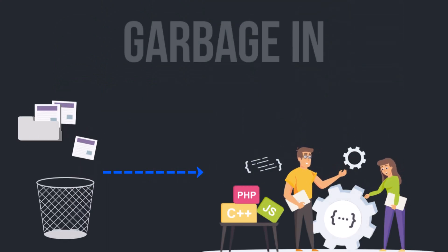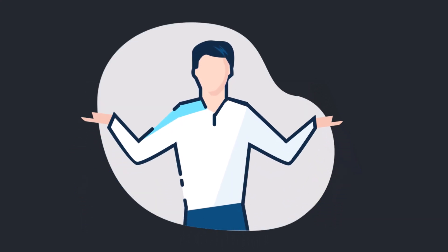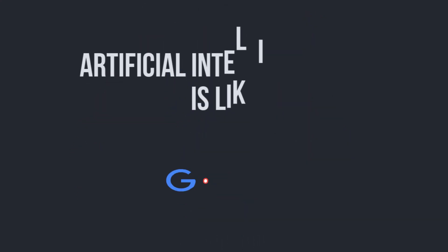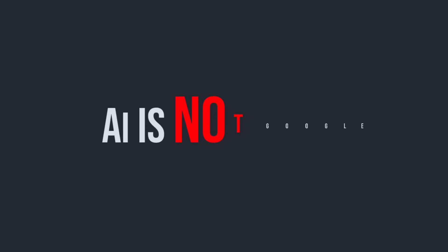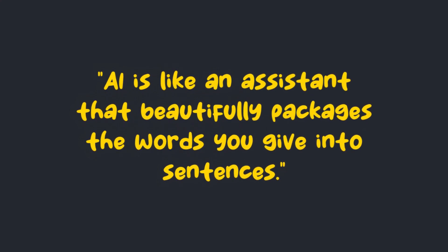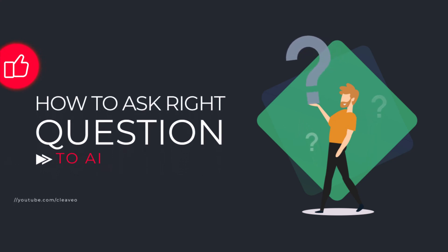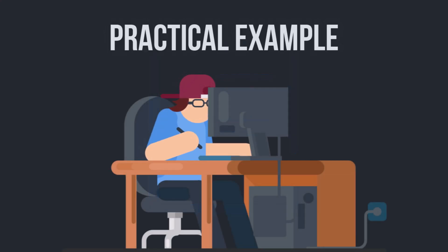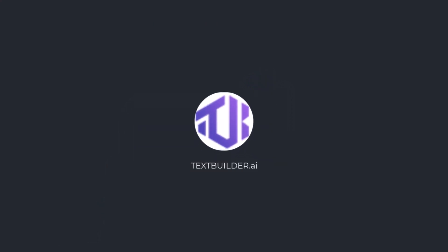In other words, garbage in, garbage out. Before going in deep, let me tell you something most important. The biggest mistake is to think that artificial intelligence is like Google, to whom you can ask anything and who will give you a long article with accurate facts and information. But in fact, AI is not Google. AI is like an assistant that beautifully packages the words you give into sentences. That's why you have to know how to ask the right questions.